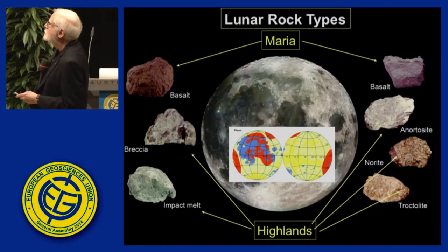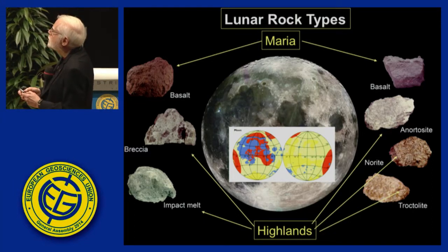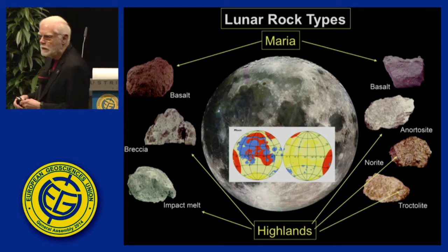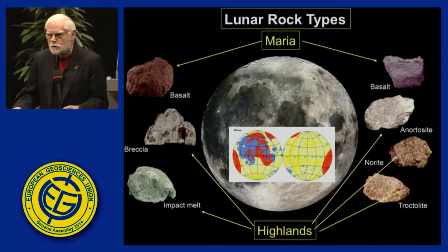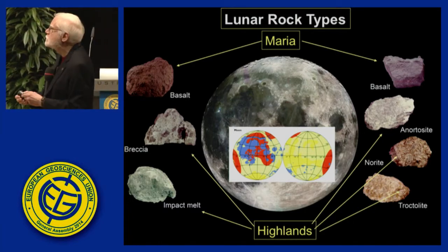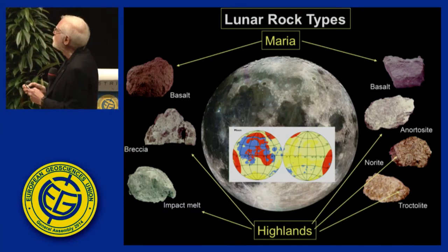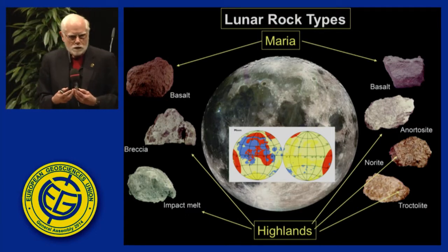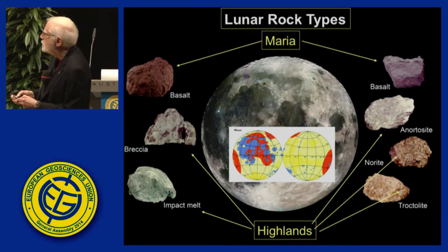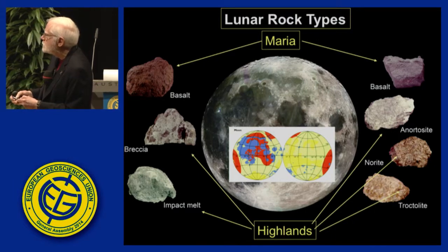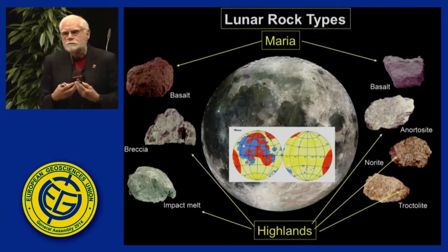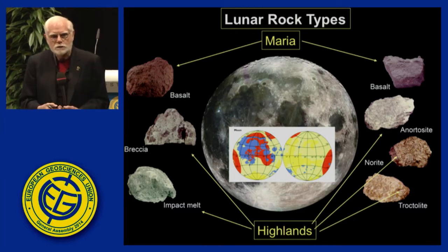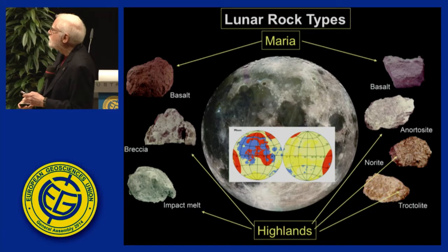We found lunar rock types. The maria — the dark areas — are formed from basalt, extrusive lava flows on the surface of the Moon, forming about 17% of the surface. The bright highlands were formed of anorthosite, norite, and troctolite. These intrusive igneous rocks are modified on the surface by impacts — all the yellow and orange units are impact cratering units which form breccias and impact melts. We have a fundamental intrusive highlands crust modified by impact cratering in the earliest history of the planet.